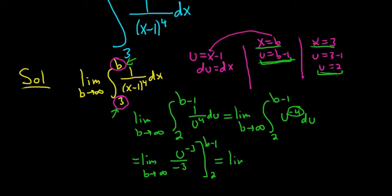So again, this is the limit as b goes to infinity. And this is negative 1 third times 1 over u cubed, rewriting it, pulling out the 3 and writing it as negative 1 third. And again, we're going from 2 to b minus 1.